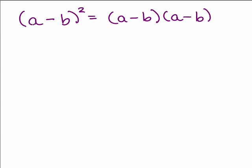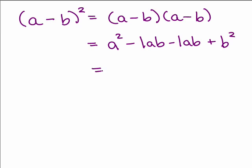What about a minus b squared? Well, this means a minus b times a minus b, so let's do this using the FOIL method. We have a times a, which is a squared. The outer product is negative ab — I'll write that as minus 1ab — and the inner is also minus 1ab. The last is negative b times negative b, which is plus b squared. These two middle terms add up to negative 2ab plus b squared.